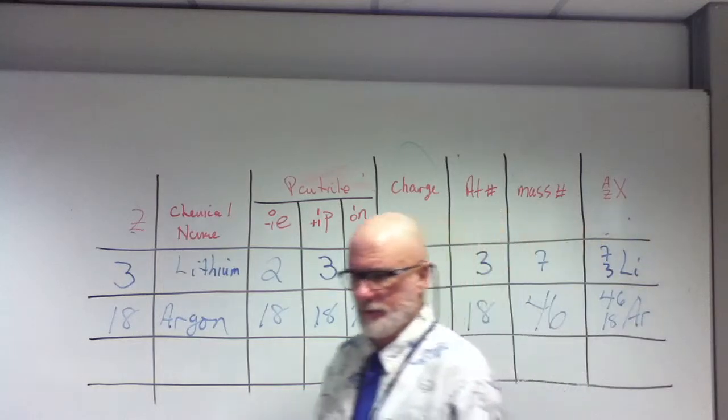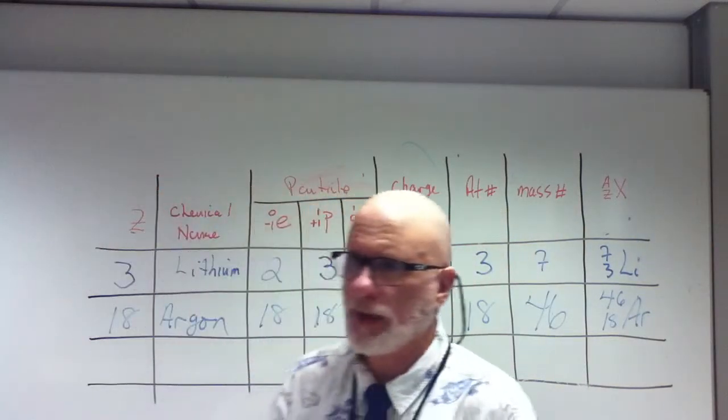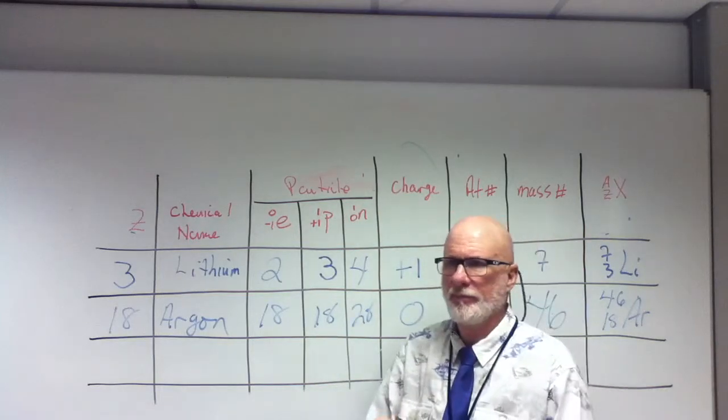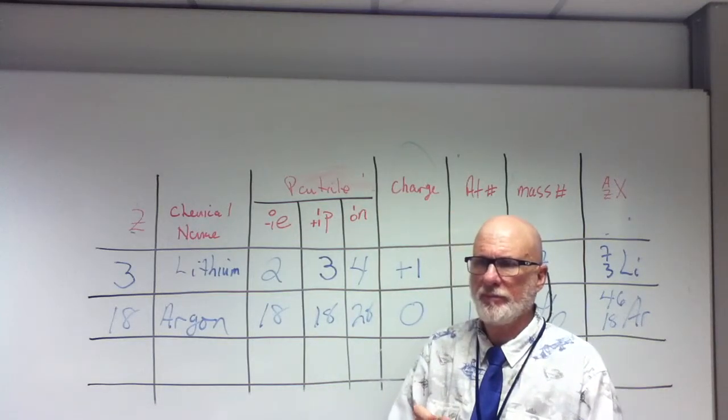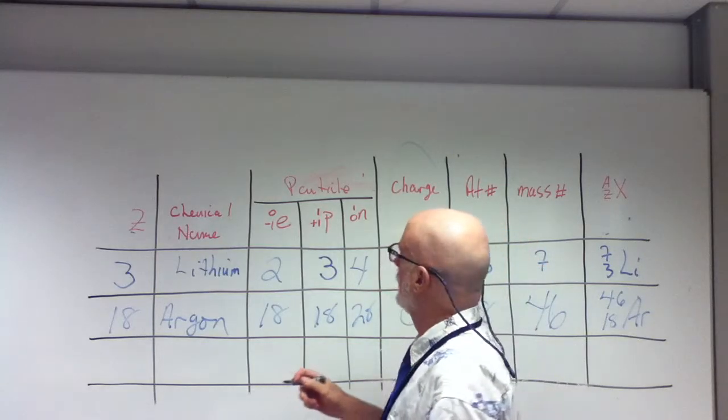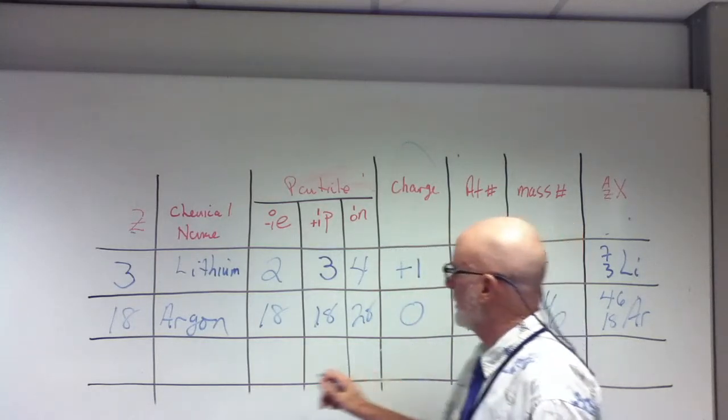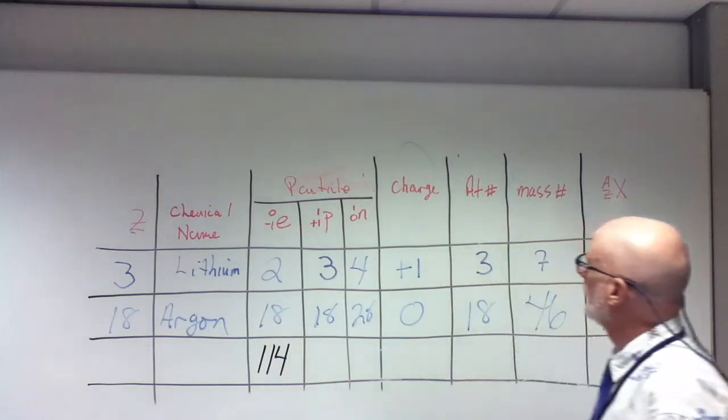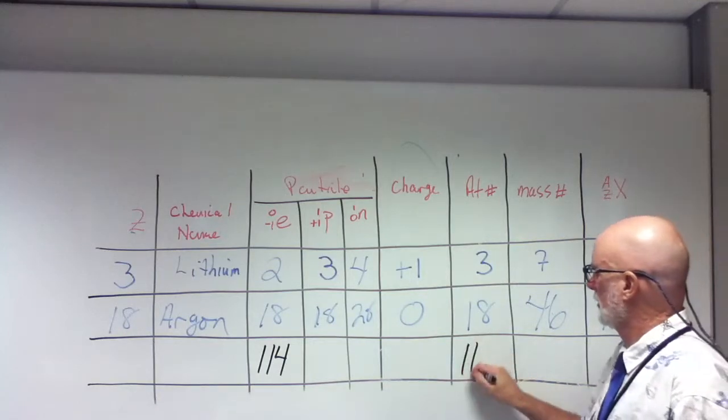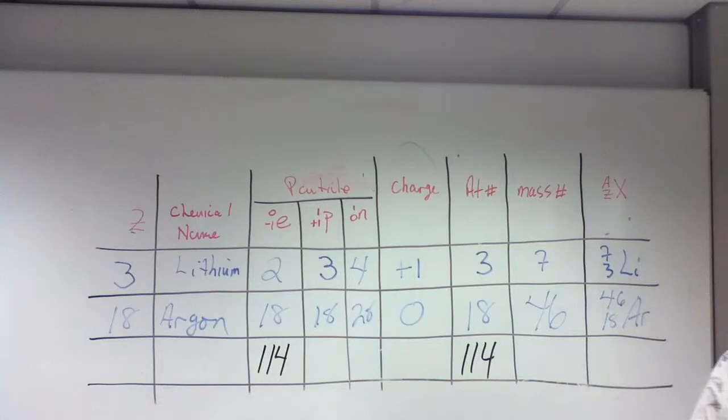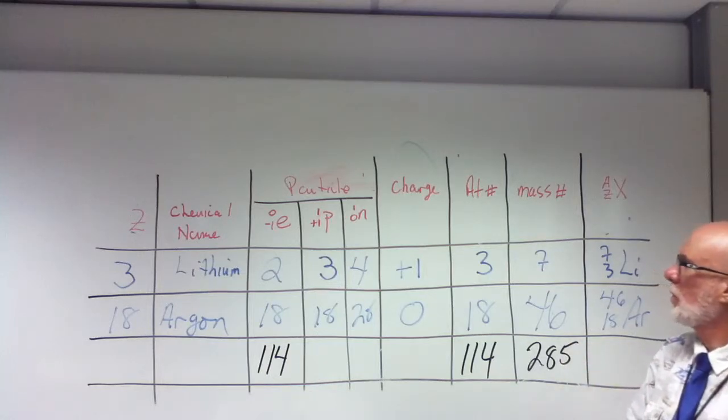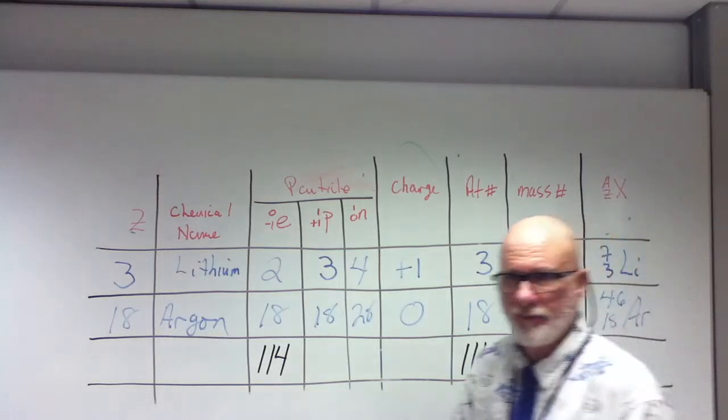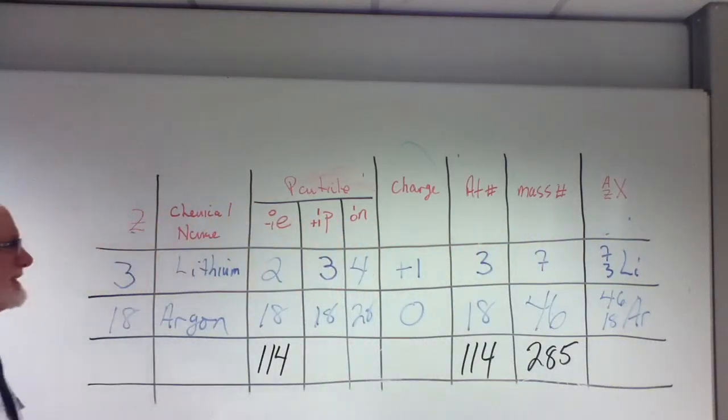All right. Let's do the last one, Augustine. Go all the way down. What do you got? It says 114 electrons. 114 electrons. The atomic number is 114. And the mass number is 285. All right, so what is Z?